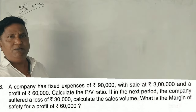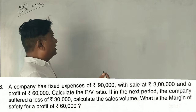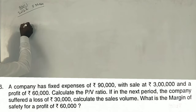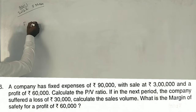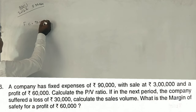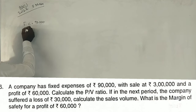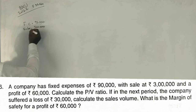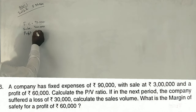Simple question. The fixed cost is 90,000 rupees. Sales is 3 lakh rupees. Profit is 60,000 rupees.